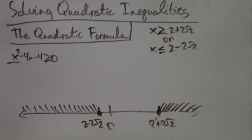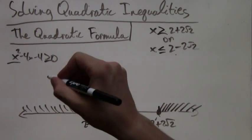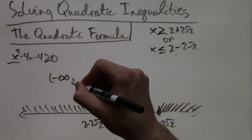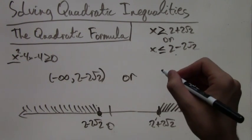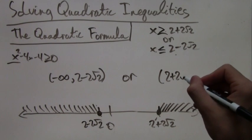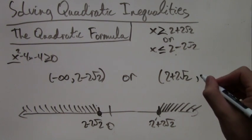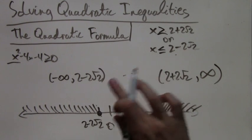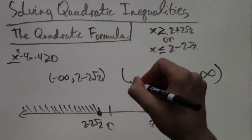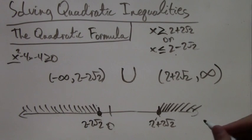Written in interval notation, this would be negative infinity comma 2 minus 2 root 2, or 2 plus 2 root 2 comma infinity. Except when we write in interval notation, the word OR becomes a capital U, the symbol for union.